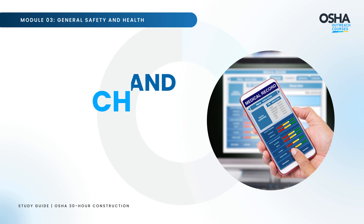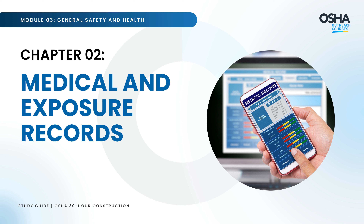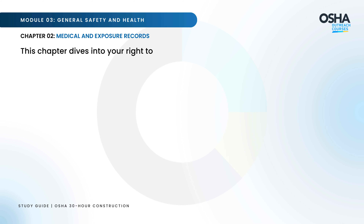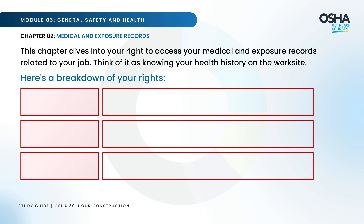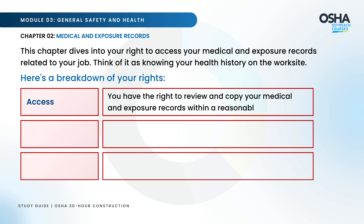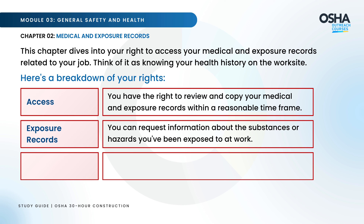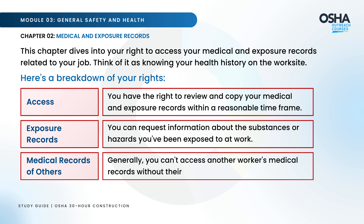Now on to Chapter 2: Medical and Exposure Records. This chapter dives into your right to access your medical and exposure records related to your job — think of it as knowing your health history on the worksite. You have the right to review and copy your medical and exposure records within a reasonable time frame, and you can request information about the substances or hazards you've been exposed to at work. Generally, you can't access another worker's medical records without their written consent.